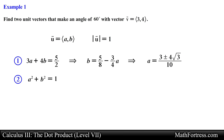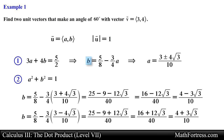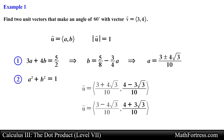The last step is to use these values and solve for b. Substituting these values and simplifying, we obtain the values for the y component of vector u. In the end, there are two unit vectors that form an angle of 60 degrees with vector v.